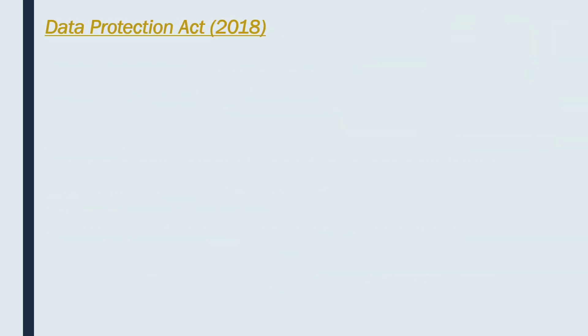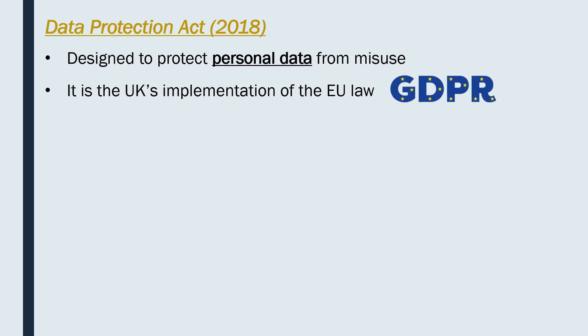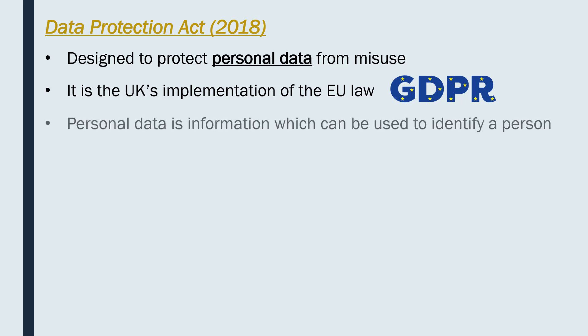The final piece of legislation is the Data Protection Act (DPA), last updated in 2018. It is designed to protect personal data from misuse. This is the UK's implementation of the European Union law called GDPR, which is why lots of websites now ask for your permission to accept cookies. Personal data is information which can be used to identify a person — things like your name and address.